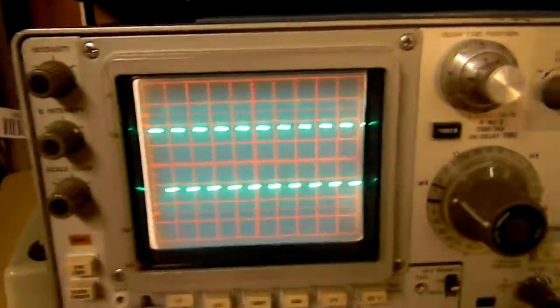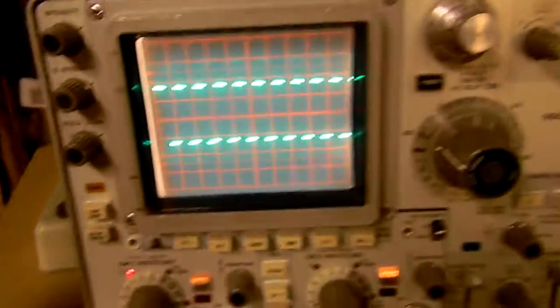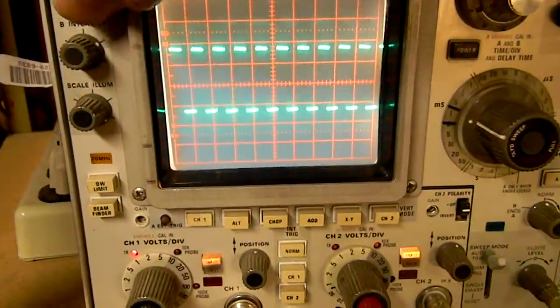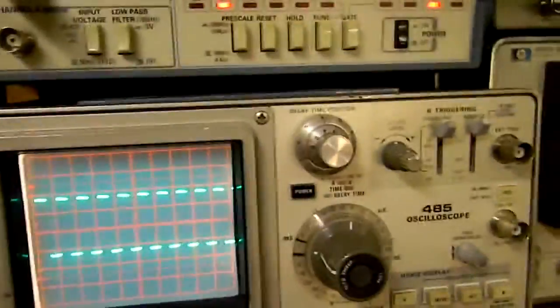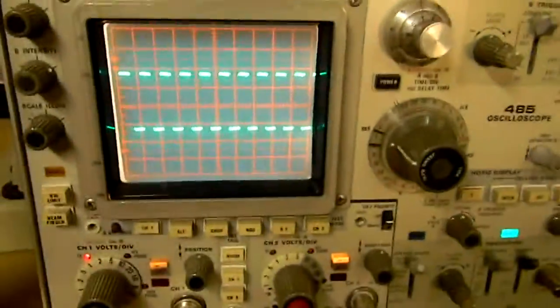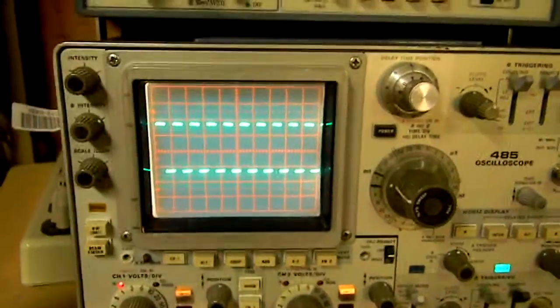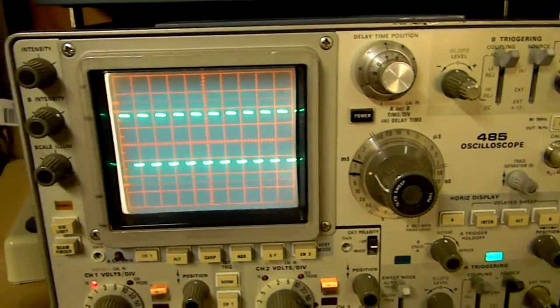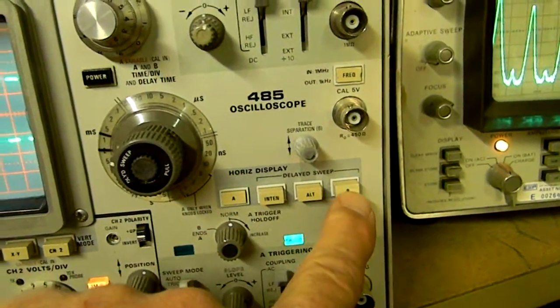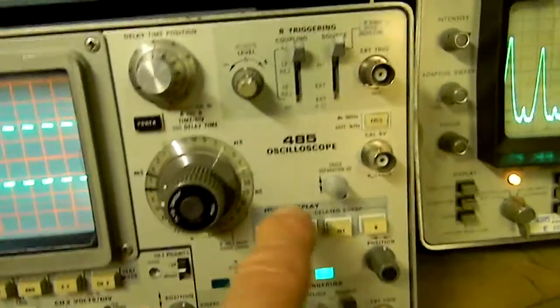Today is November 28, 2012, and I'm going to make a video here on using the old Tektronix oscilloscope. This is a model 485, beautiful old scope, and how to use the intensified and B sweep delayed, delayed sweep B, delayed sweep intensified and alternate.